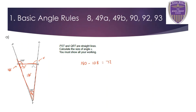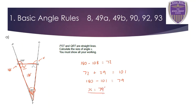I can now use 72 degrees with the 29 degrees and add those together because they are two of the angles in the triangle. Adding them together gives me 101 degrees. I can subtract that from 180 degrees, which leaves me with 79 degrees. So in this case, X is equal to 79 degrees. Here are my calculations to show how I worked it out.